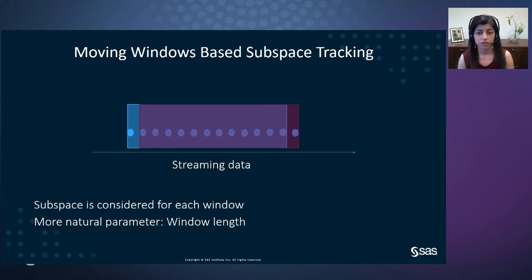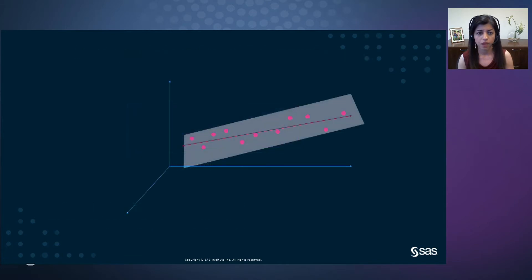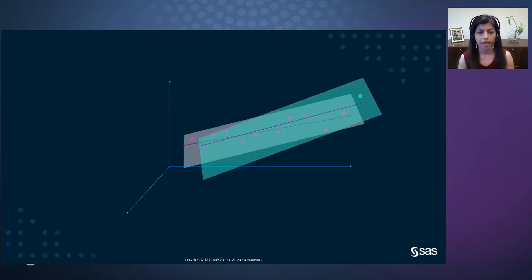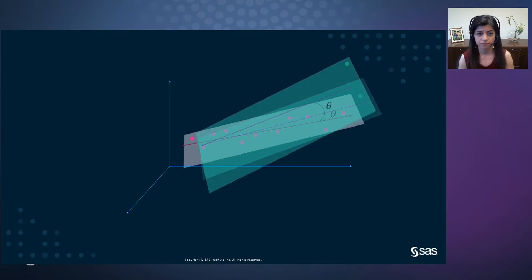Also, to track the subspace, instead of considering the traditional measures of change, we introduce two new measures: principal component angle change and principal component absolute angle. In this 3D graph, you can see the data and the first principal component direction. With the sliding window concept, when we get a new streaming observation, a new first principal direction is calculated based on the subspace spanned by the new window. We can measure the angle between the first principal direction of the previous window and the first principal direction of the new window, and consider this as a measure of change in the subspace. If this angle is large, it can indicate that the last streamed observation is anomalous.